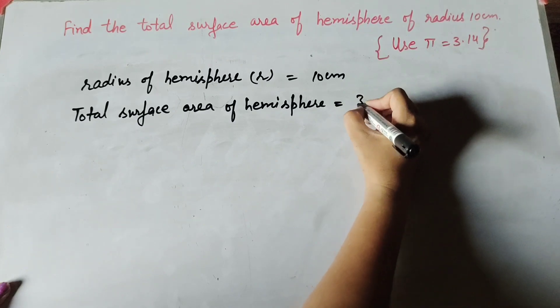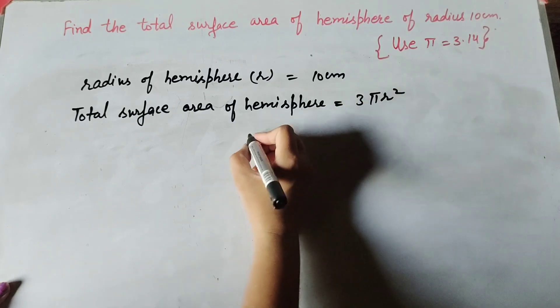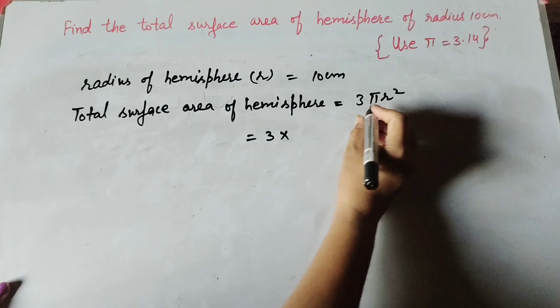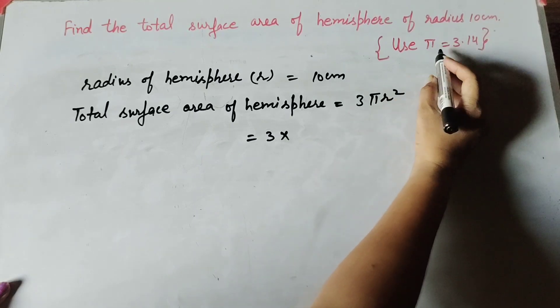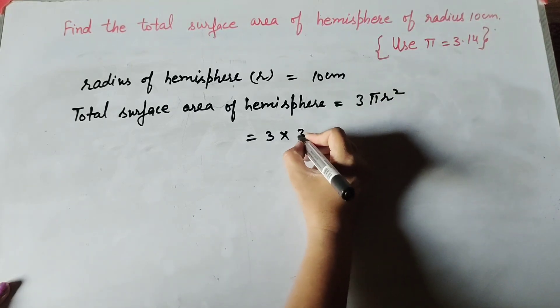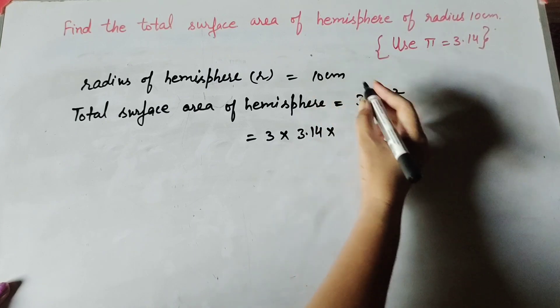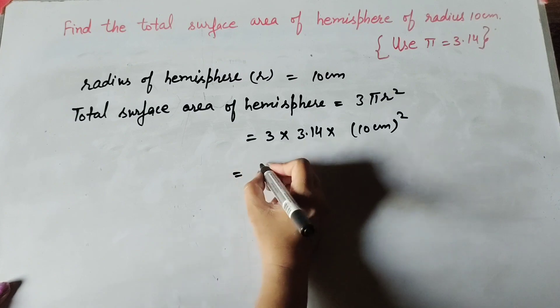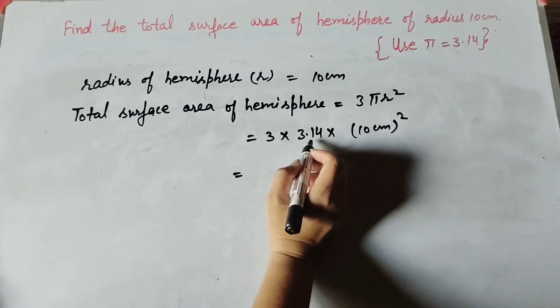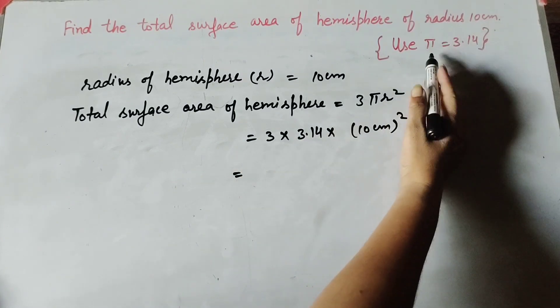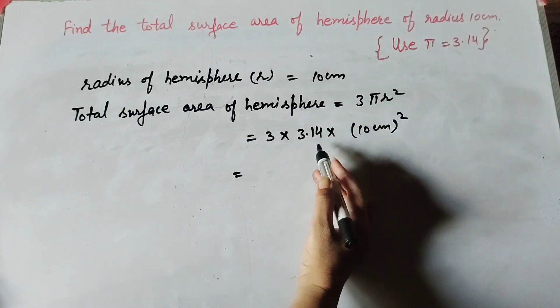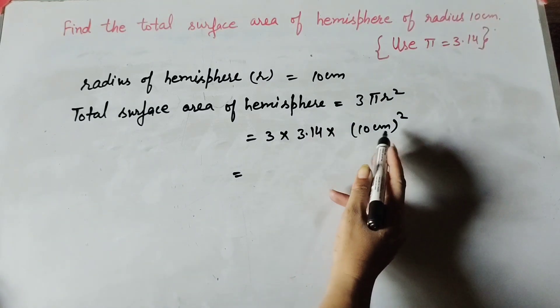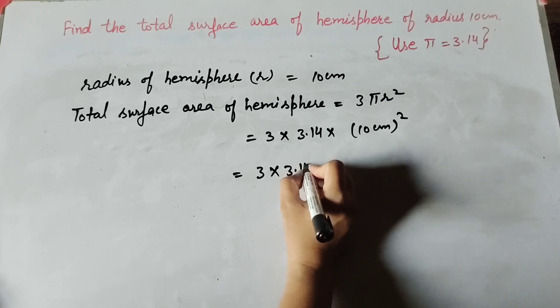It is equal to 3πr². Using the given values: 3 × 3.14 × r², where r is radius, 10 centimeter squared. We use the value of π = 3.14 when it is given; otherwise you can use 22 over 7.